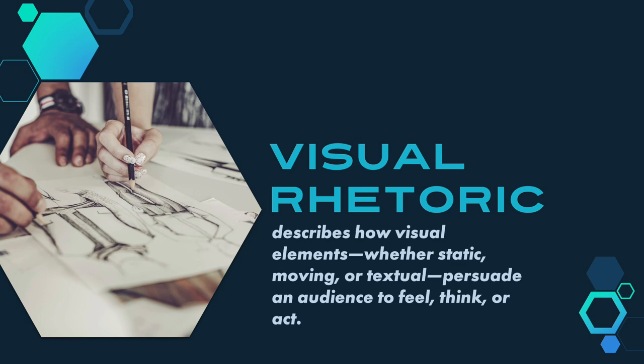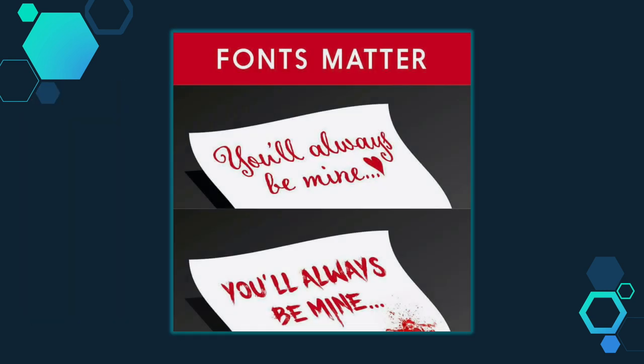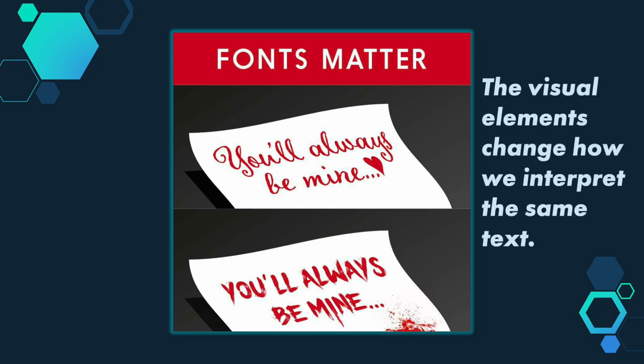The additional visual language in a text means it can communicate its rhetorical purpose a lot faster and more efficiently, and the visual elements can significantly change the impact of the message. Take this image for instance. In both examples here, the written content is the same, but the difference in font very quickly communicates whether those words are meant as an endearment or as a threat. The visual elements change how we interpret the same text.